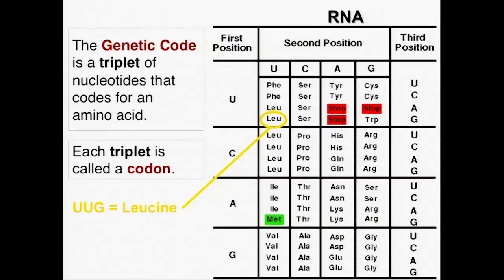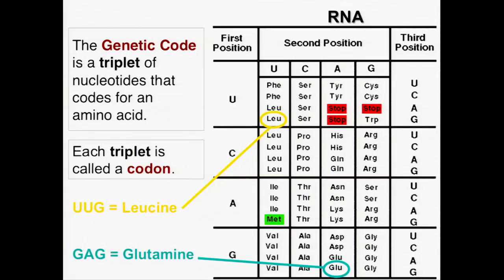If we have a coding region along the messenger RNA that says U in the first position, U in the second position, and G in the third — so UUG — that will only result in a leucine being put in place in the growing chain of a protein. If we then have G, A, G, that only codes for glutamine. So UUG first puts down a leucine, then GAG puts down glutamine — giving us leucine and glutamine in order on our growing protein chain.